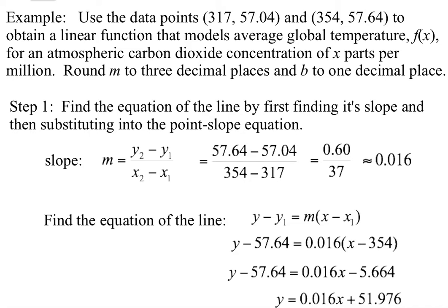We use the data points (317, 57.04) and (354, 57.64) to obtain a linear function, so a line, that represents the model's average of global temperature, so we're going to make a function. So you can go ahead and read that, and we have our slope and y-intercept stuff that we're going to find.